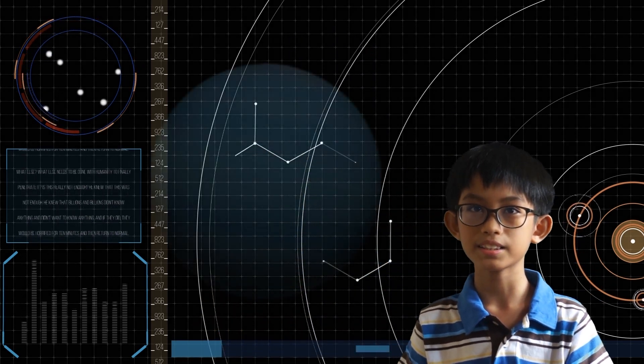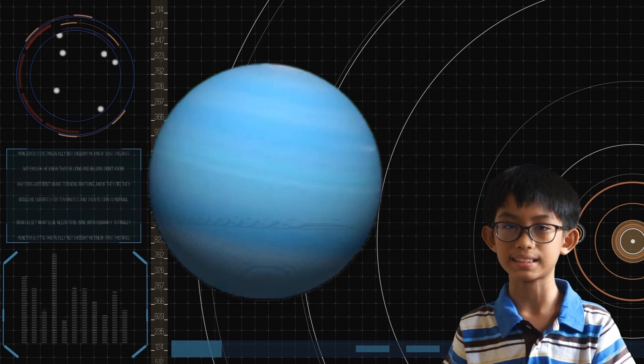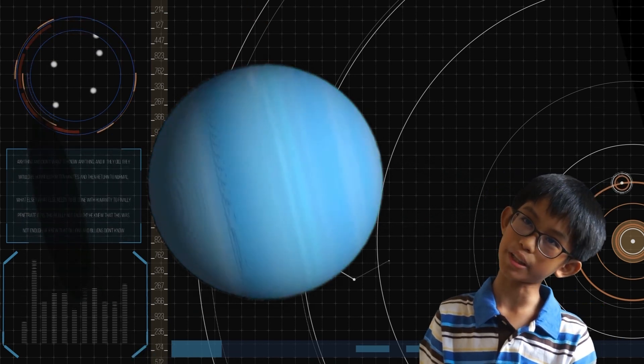The seventh planet from the Sun is Uranus. Uranus is a very cold planet. And what is unusual about it is that it tips on its side like a bowling ball.